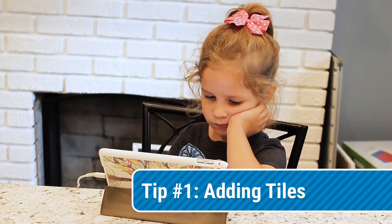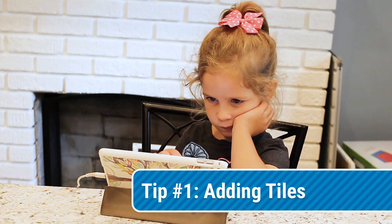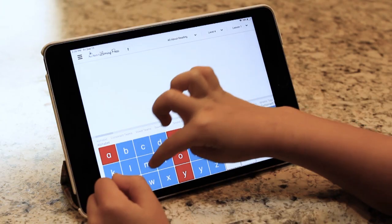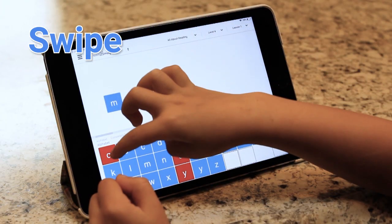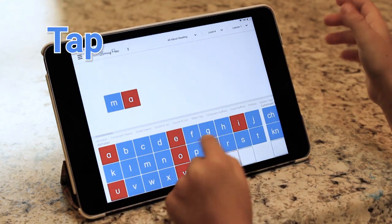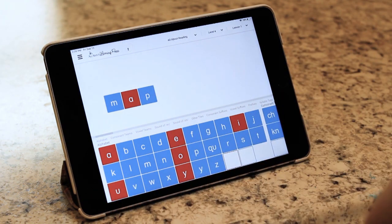For our first tip, let's talk about adding tiles to the letter building area. You can add tiles using three methods. You can drag, swipe, or just tap the letter to add it above. Which method do you prefer?